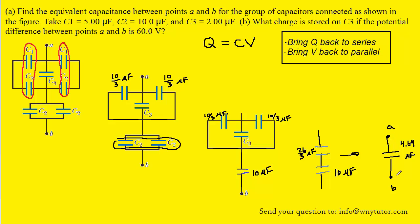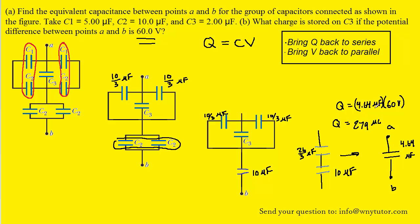Let's go back to this diagram. We know the equivalent capacitance, and the potential difference between points A and B is 60 volts. So the charge Q equals 4.64 microfarads multiplied by 60 volts, giving us a charge of approximately 279 microcoulombs. Now we move backwards from this capacitor to the two from which it was derived. Those two are in series, and according to our rules, whenever we move backwards to a series arrangement, we bring the charge with us. That means the charge on each of those two capacitors will also be 279 microcoulombs.